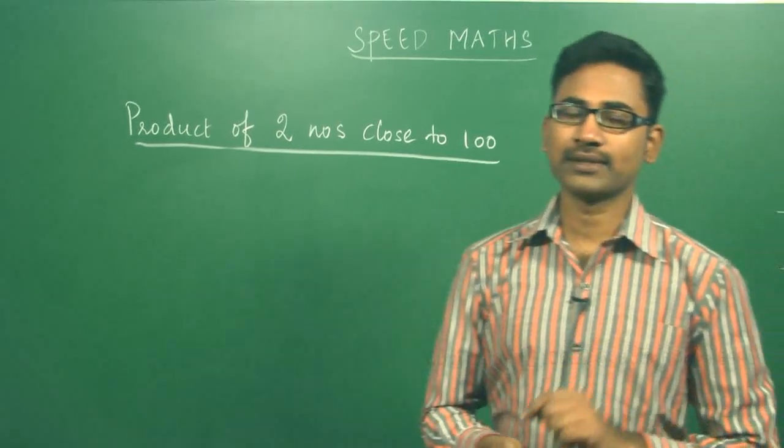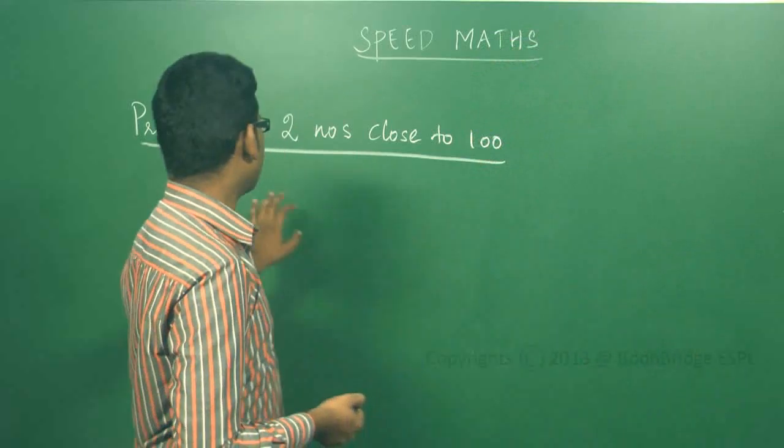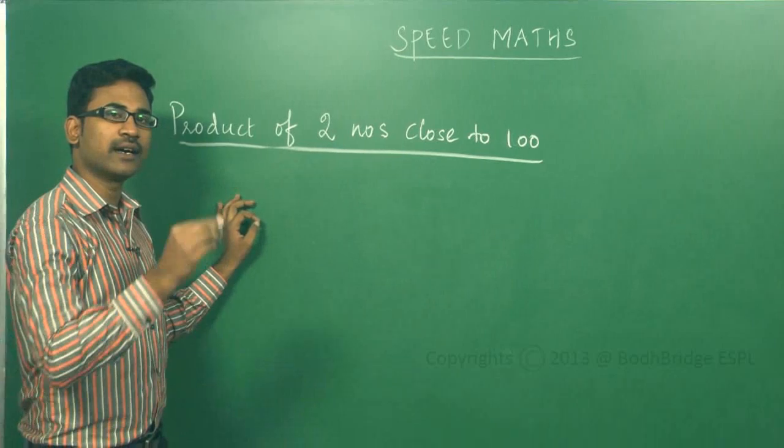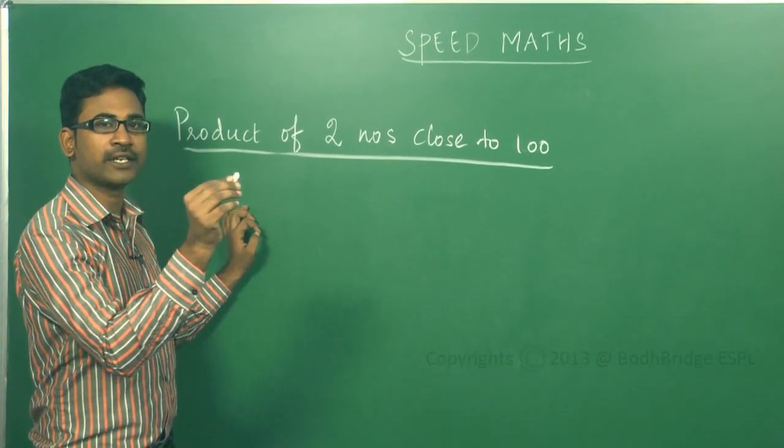Next one is product of two numbers close to 100. I'm going to multiply two numbers which are close to 100. As we've already seen, close to numbers like 100 to 125 and this side 100 to 75.